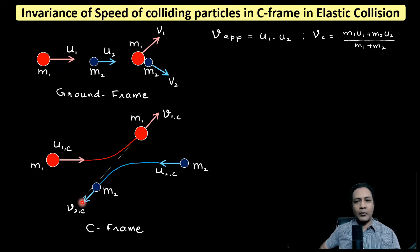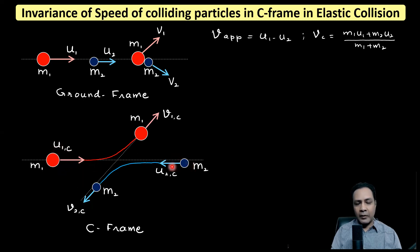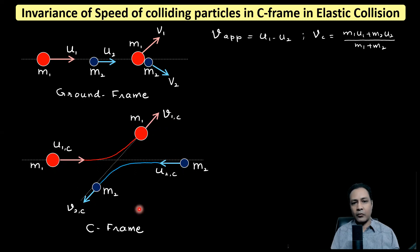The key property of the C frame is that the total momentum is zero. So in the C frame the particles always move opposite to each other — at all moments the total momentum is zero. Initially particle m1 has velocity u1c and particle m2 has velocity u2c, and after collision their velocities become v1c and v2c. After collision they are also moving opposite to each other, just as they were moving toward each other before collision.